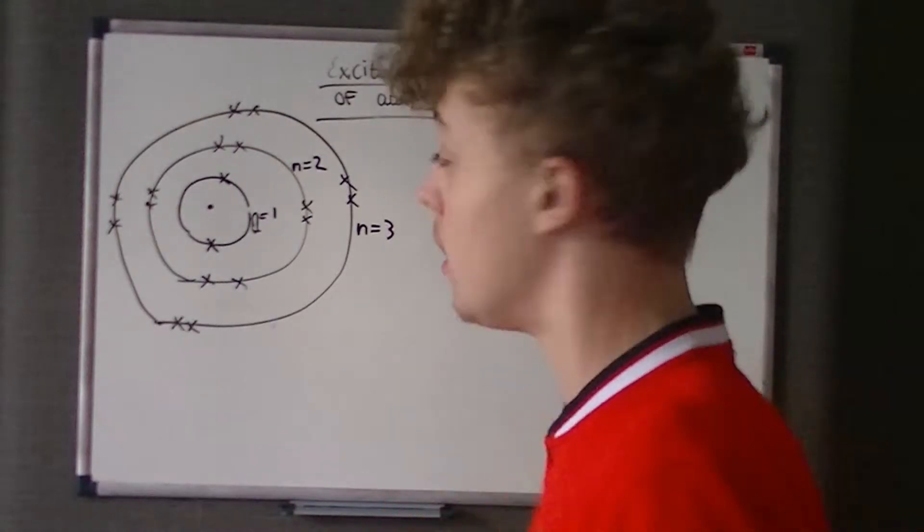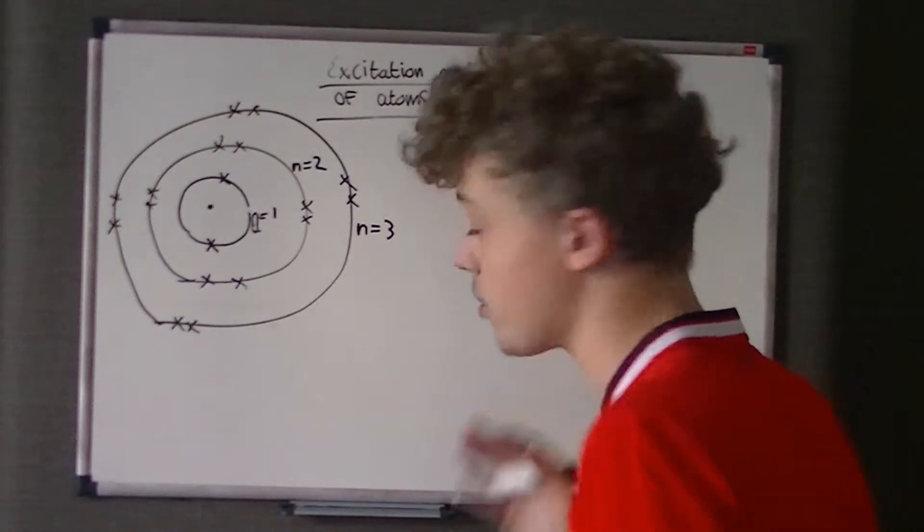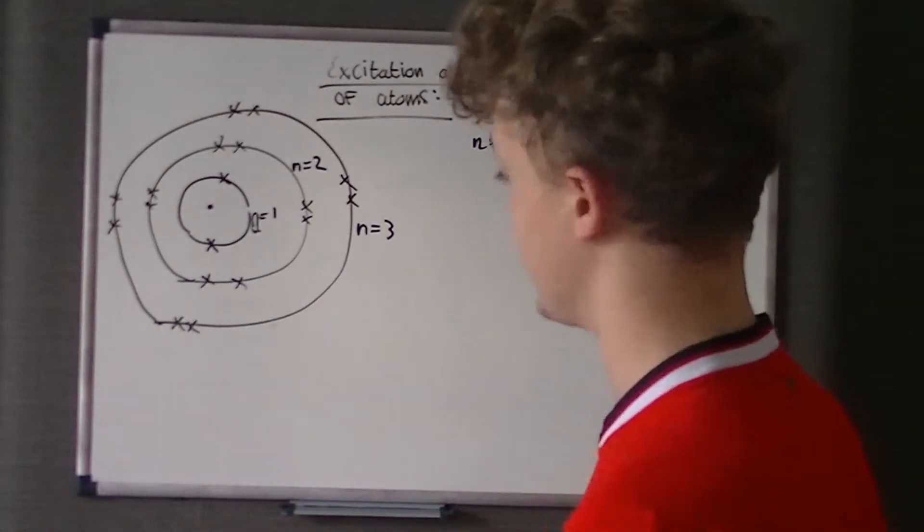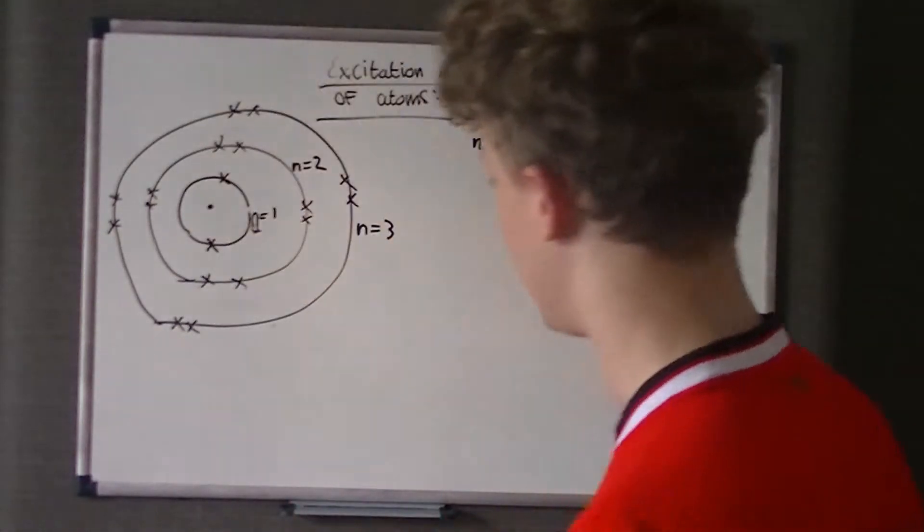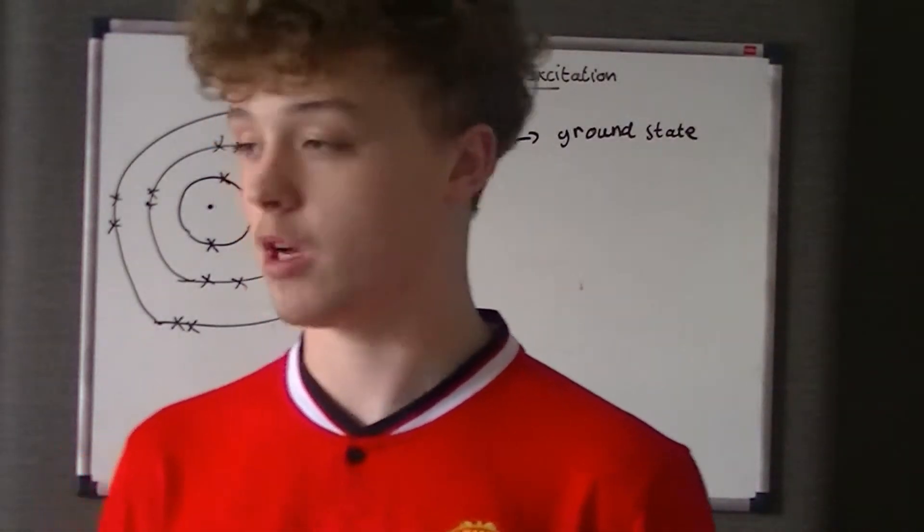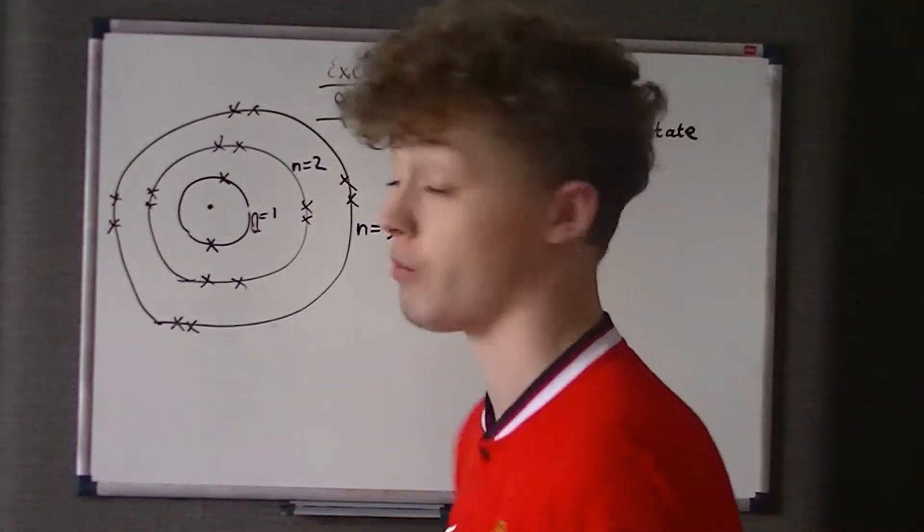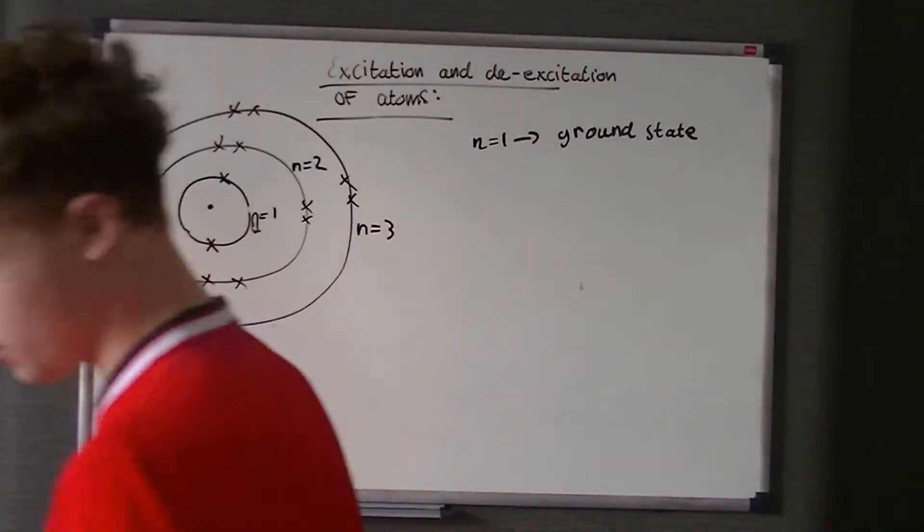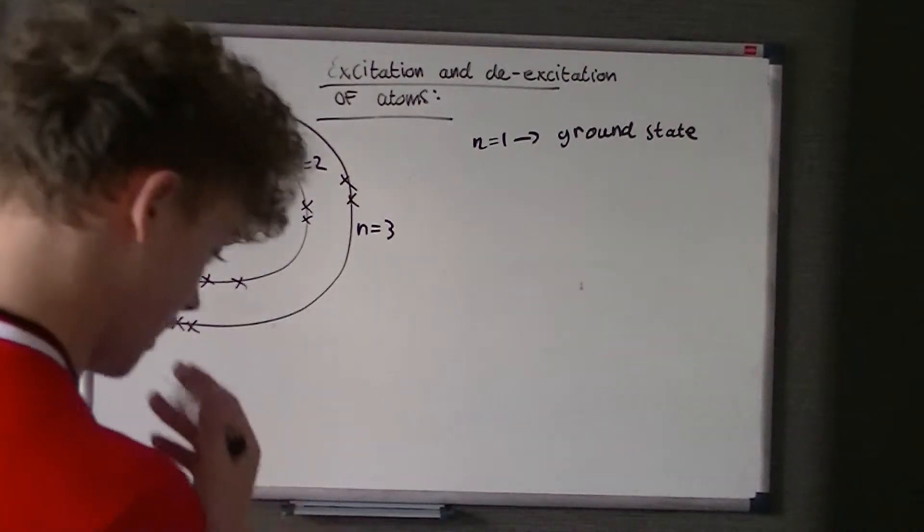So N1 is something we call the ground state. Now, the ground state is just the lowest orbit in which the electron has the lowest amount of energy. So no electron that is above the ground state can have a lower energy than the electrons in the ground state. It just simply cannot happen. That's how the electron world works. Stubborn they are. Anyway, so N1 is the ground state.